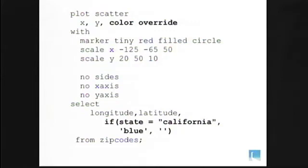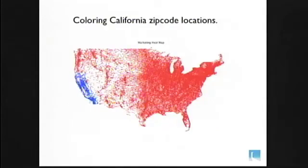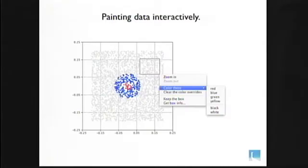Here's a more exotic example. Down at the bottom, you see from zip codes. This is zip code data with latitude, longitude, and associated values. One of them is states. If we look at the result of that script, we see red zip codes as the default with California blue. You could do the same thing with marketing data. Make a marketing heat map corresponding to sales and so on.